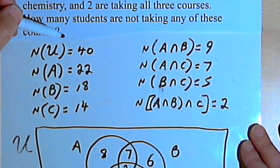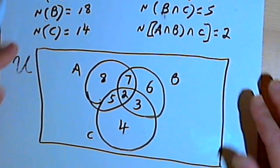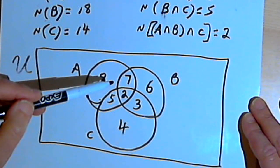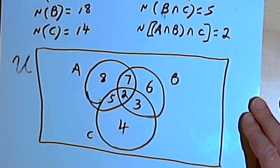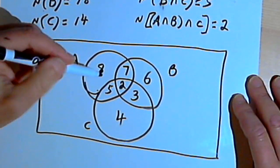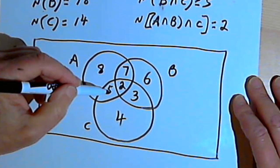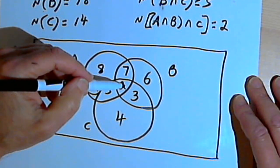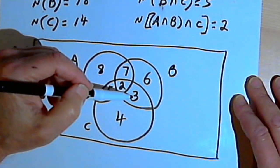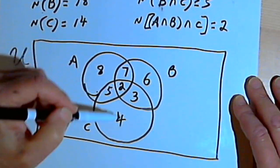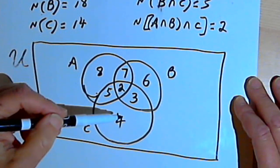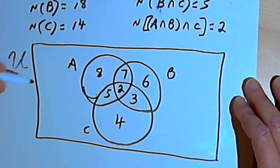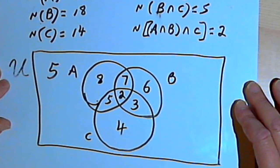How many students are not taking any of these courses? All I have to do is add up the total number of students in any of these courses — algebra, biology, or chemistry — and subtract from the universal set of 40. So: 8 plus 7 is 15, plus 5 is 20, plus 2 more is 22, plus 6 is 28, plus 3 is 31, and 4 more is 35. So there were 35 students taking algebra, or biology, or chemistry, or some combination. With 40 students total, that means there are 5 students left who are not taking algebra, biology, or chemistry.